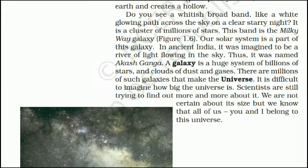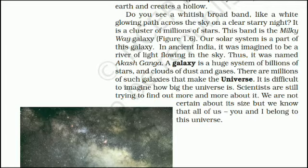Do you see a whitish broad band, like a white glowing path across the sky on a clear starry night? It is a cluster of millions of stars. This band is the Milky Way galaxy. Our solar system is a part of this galaxy. In ancient India, it was imagined to be a river of light flowing in the sky, and thus named Akashganga. A galaxy is a huge system of billions of stars and clouds of dust and gases. There are millions of such galaxies that make up the universe. It is difficult to imagine how big the universe is. Scientists are still trying to find out more about it. We are not certain about its size, but we know that all of us — you and I — belong to this universe.